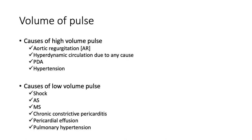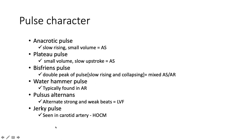Causes of a high volume pulse: hyperdynamic circulation from any cause — fever, anemia, thyrotoxicosis, beriberi. Also aortic regurgitation, patent ductus arteriosus, and hypertension. Causes of low volume pulse: shock, aortic stenosis, mitral stenosis, chronic constrictive pericarditis, pericardial effusion, and pulmonary hypertension.